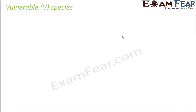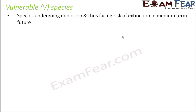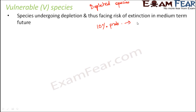Vulnerable species, denoted by V, are undergoing depletion and facing risk of extinction in the medium-term future. There is no possibility of extinction in the near future, but their total population is gradually reducing — hence they are also called depleted species. In numerical terms, there is a 10% probability that these species may become extinct in the next 100 years, which is considerably less severe than critically endangered or endangered.